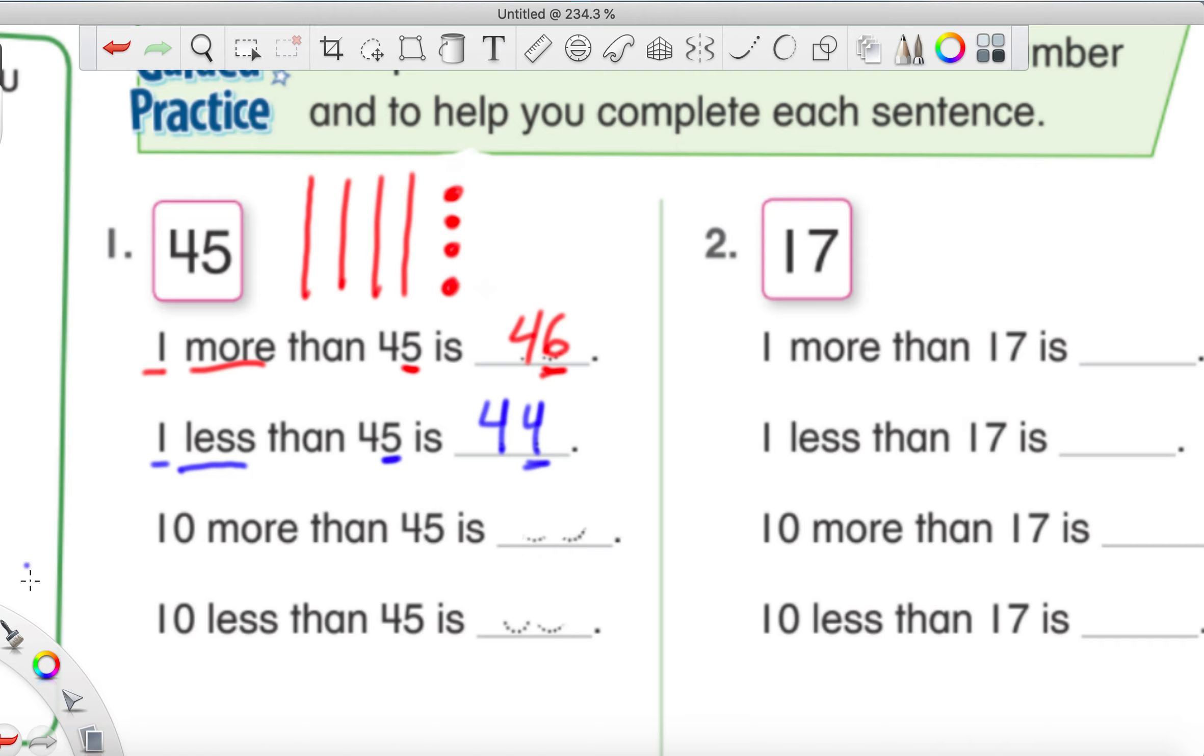10 more than 45. What are we going to do? Should I add a 10 stick or a 1 circle? I'm going to add a 10 stick because we're adding a 10, 10 more. Now let's see how many we have: 10, 20, 30, 40, 50, 51, 52, 53, 54, 55. So now we have 55. That's how we got that. The 10s place went from a 4 to a 5.